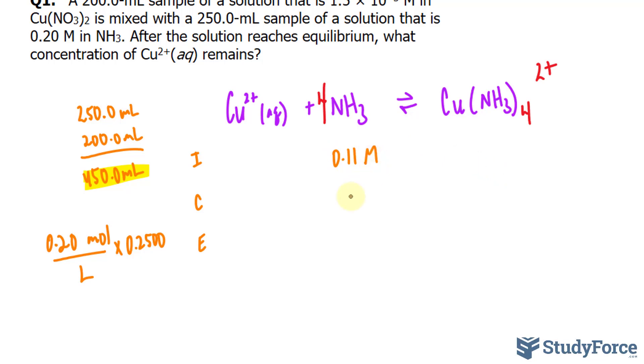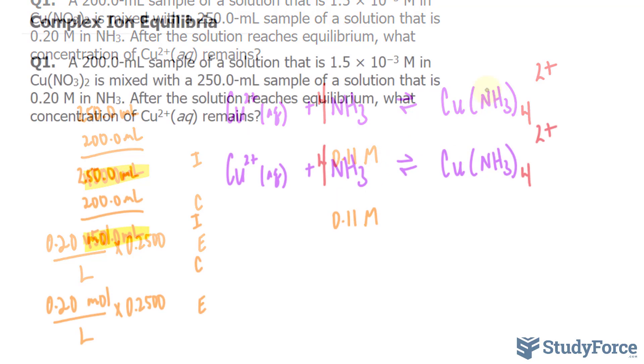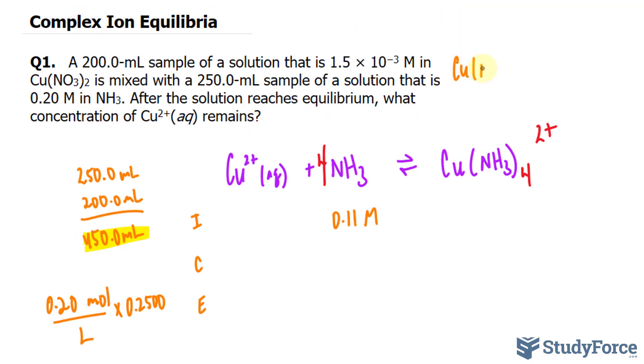We have to repeat this process for Cu2+. Remember, in this molecule we have Cu(NO3)2, and it breaks down into Cu2+ plus NO3-.